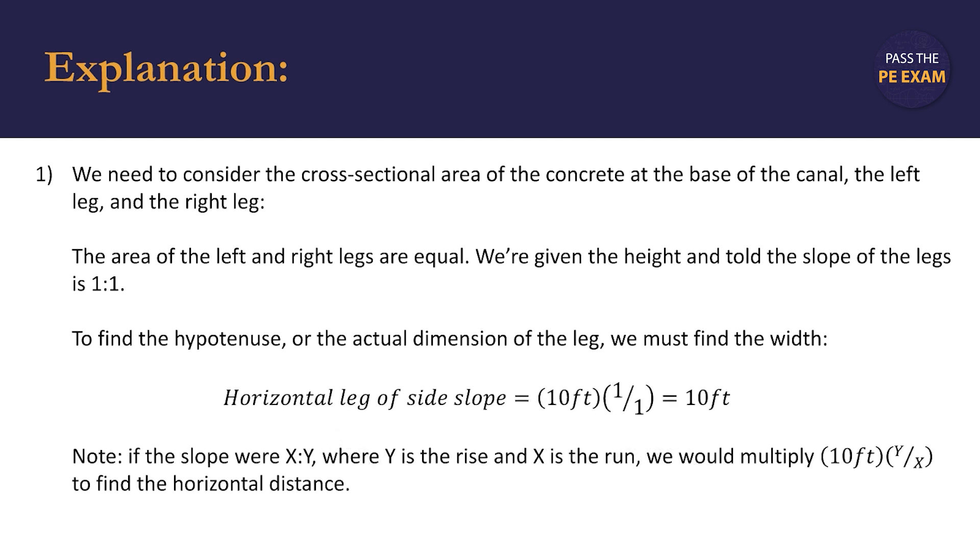To find the hypotenuse or the actual dimension of the leg, we must find the width. So the horizontal leg of the side slope or the hypotenuse is 10 feet times 1 over 1. This is really simple, but if the slope were x to y where y is the rise and x is the run, we would multiply the 10 feet by quantity y over x to find the horizontal distance.